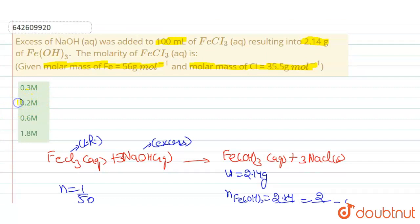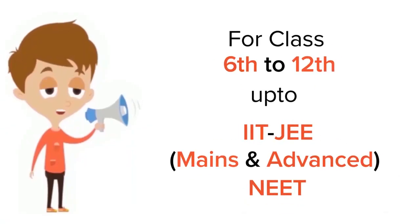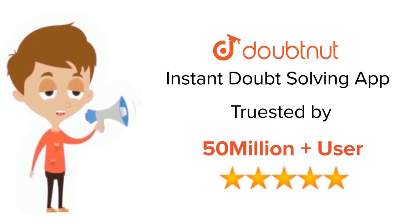So our final answer is: the molarity of FeCl₃ equals 0.2 molar, which corresponds to option B.